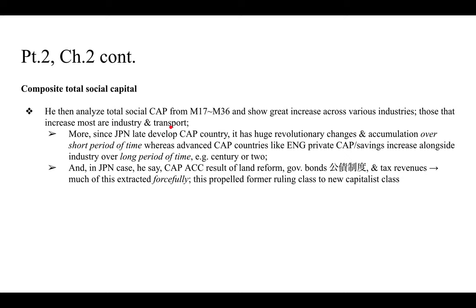Since Japan was a late-developing capitalist country it had huge revolutionary changes in accumulation over a short period of time — very dramatic changes that completely transformed people's lives, and exploitation was quite intense. Whereas advanced capitalist countries like England had capital and savings that built up alongside industry over a century or two, in Japan's case capital accumulation was the result of land reform, government bonds, and tax revenues, much of it extracted forcefully, propelling the former ruling class to become the new capitalist class.